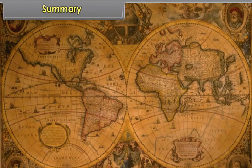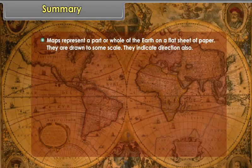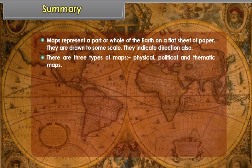Summary: Maps represent a part or whole of the earth on a flat sheet of paper. They are drawn to some scale. They indicate direction also. There are three types of maps: Physical, political and thematic maps.